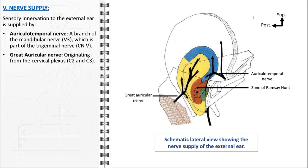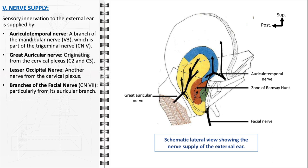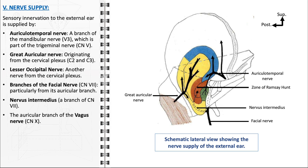Another major contributor is the great auricular nerve, originating from the cervical plexus — specifically from the C2 and C3 spinal nerves — providing sensation to the lower and posterior parts of the auricle and the area behind the ear. The lesser occipital nerve, also from the cervical plexus, supplies the skin of the upper and posterior parts of the auricle, ensuring it can sense touch, pain, and temperature changes. Branches of the facial nerve, particularly from its auricular branch, contribute a sensory role around the ear canal. The nervus intermedius, a branch of the facial nerve, is involved in sensation of the deeper regions of the ear canal. Lastly, the auricular branch of the vagus nerve provides sensation to a small area of the external ear, notably the inner part of the concha and the region adjacent to the external auditory canal.